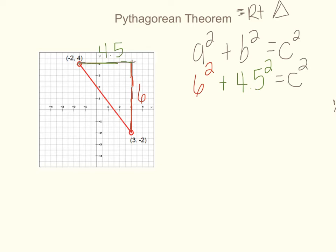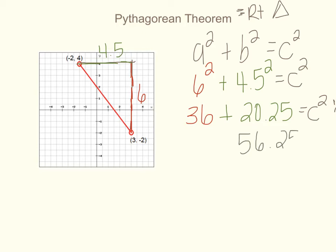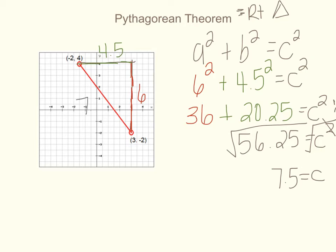Now I just need to solve. Six squared is thirty-six, four point five squared is twenty point two five, and that equals c squared. Thirty-six plus twenty point two five is fifty-six point two five, equal to c squared. Then we square root both sides — those cancel — and c equals seven point five. That's reasonable because the hypotenuse of seven point five is the longest side, and it's pretty close to the legs of six and four point five.